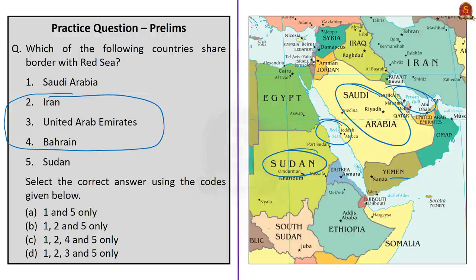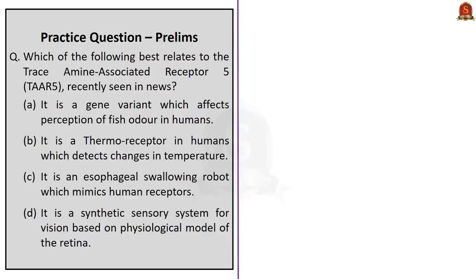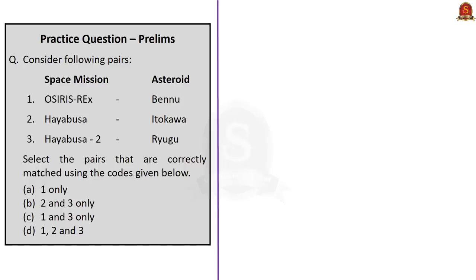The next question asks what best relates to the Trace Amine-Associated Receptor phi, or TAAR-phi, recently seen in news. The correct answer is option A: it is a gene variant which affects the perception of fish odor in humans. The following question presents space missions matched with associated asteroids — OSIRIS-REx with Bennu, Hayabusa with Itokawa, and Hayabusa 2. All the missions are correctly matched, so the correct answer for this question is option D: one, two, and three.